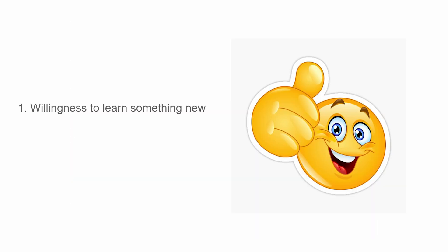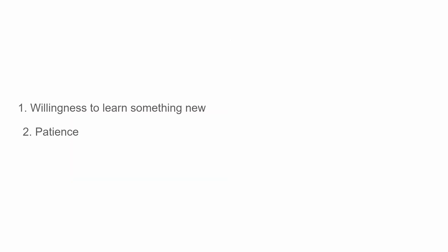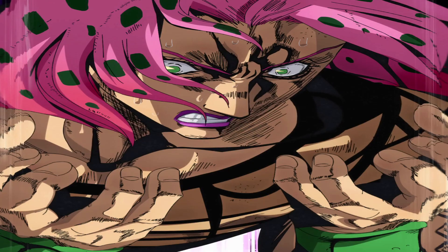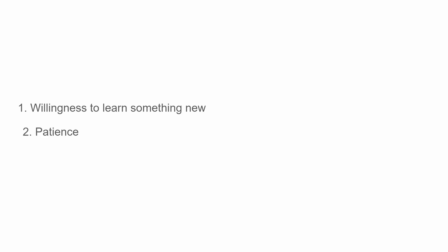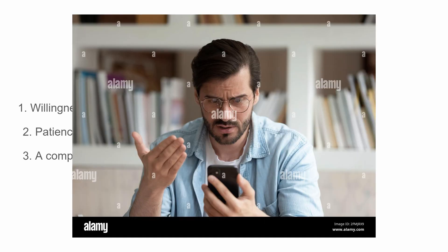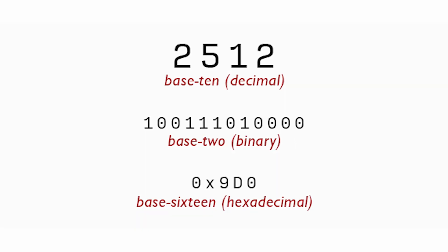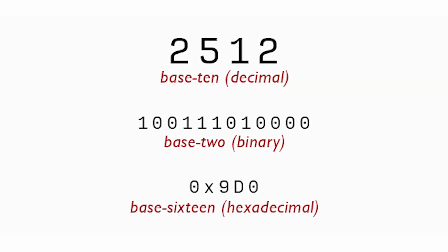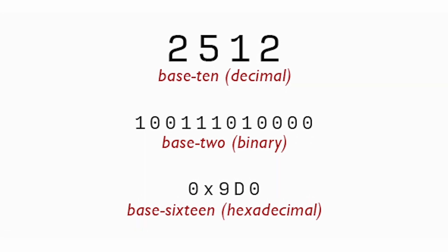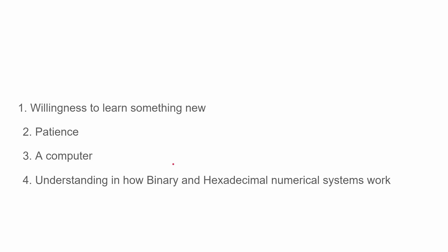First thing, you just have to want to learn something new. You clicked on the video, I think you have it, right? Second thing is patience — unfortunately that's how it is, but I think it pays off. Third thing, a computer obviously. And understanding how binary and hexadecimal numerical systems work. You can look it up on the web — it's like five minutes to learn this.